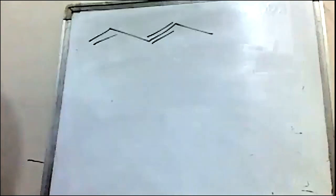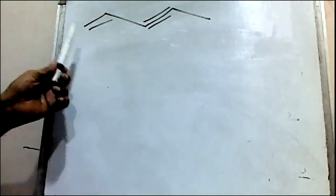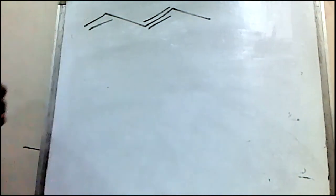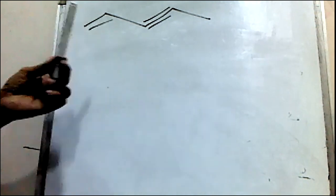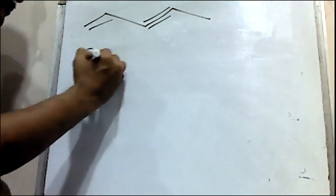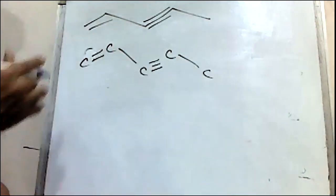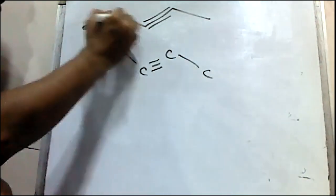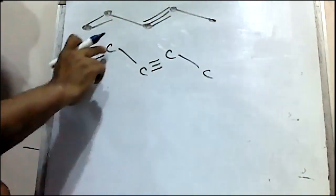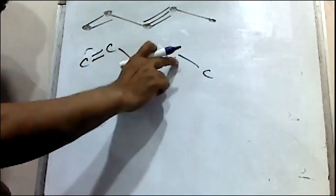First, write the complete structural formula. If you write the complete structural formula, you can observe each carbon: carbon, carbon, carbon — carbon has a maximum valency of four.